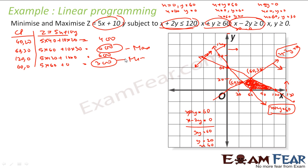What I did was: I plotted all the constraints on the graph, found the common feasible area which was a closed region with 4 corner points, and for all these corner points I found the value of Z. The maximum value is 600 and the minimum is 300.